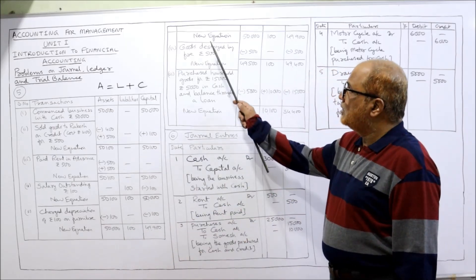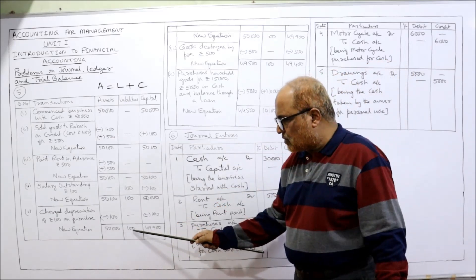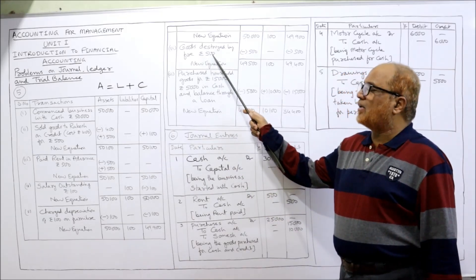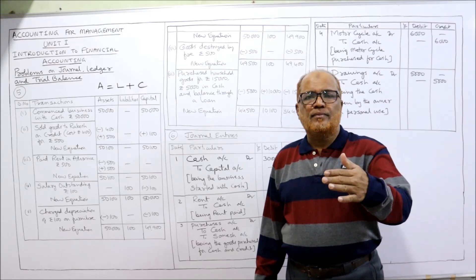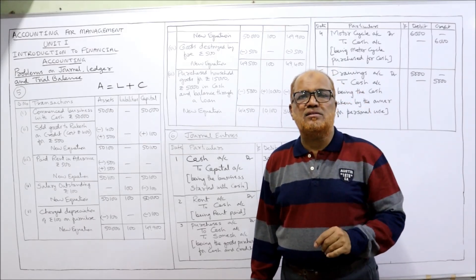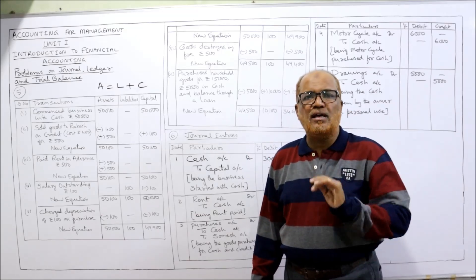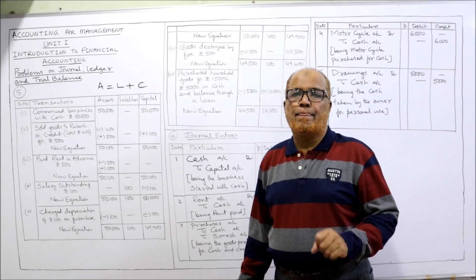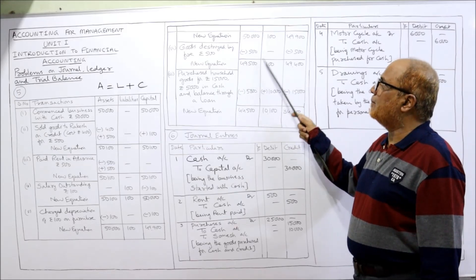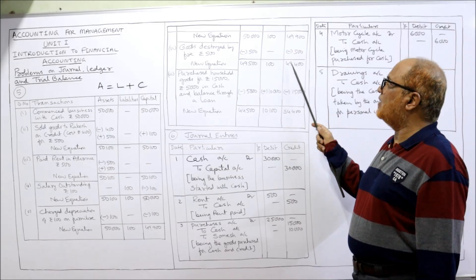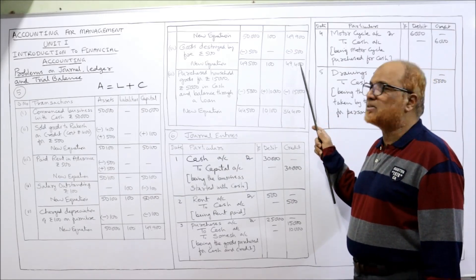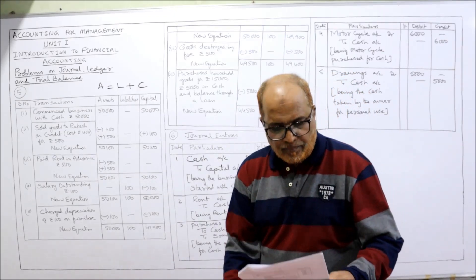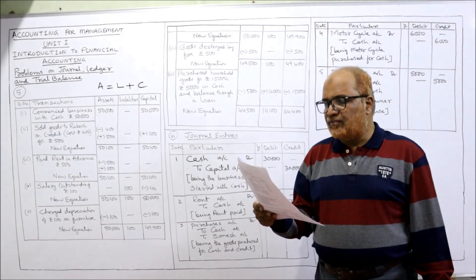Sixth transaction: goods destroyed by fire 500. When goods are destroyed, assets decrease by 500 (minus 500). Goods destroyed is a loss, so capital also decreases (minus 500 from capital). New equation: assets 50,000 − 500 = 49,500; liabilities 100; capital 49,900 − 500 = 49,400. Check: 100 + 49,400 = 49,500. Equation holds.